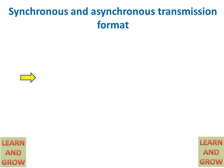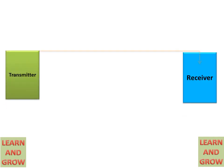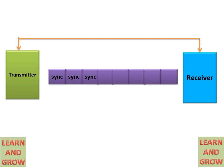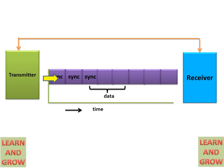In synchronous transmission, the transmitter and receiver are synchronized with each other. The transmitter transmits data and the receiver receives it — no start or stop bits are used. Data is sent one by one without any stop clock. When data comes from the transmitter, it starts sending and the receiver receives it regularly with no particular restriction in between.